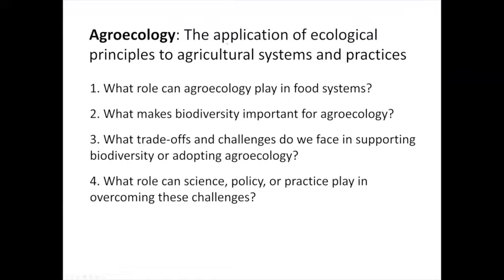My simple interpretation of agroecology is: the application of ecological principles to agricultural systems and practices. I've chosen four questions to address: what role can agroecology play in food systems; what makes biodiversity important for agroecology; what are the trade-offs and challenges in supporting biodiversity; and what role can science, policy, and practice play in overcoming these challenges? I'll briefly touch on each, providing thoughts for further discussion.